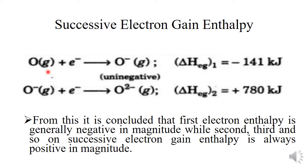Similarly, in the case of oxygen, the first electron gain enthalpy is negative in magnitude while the second is positive. From this it is concluded that the first electron gain enthalpy is generally negative in magnitude, while the second, third, and so on — successive electron gain enthalpies — are always positive in magnitude.